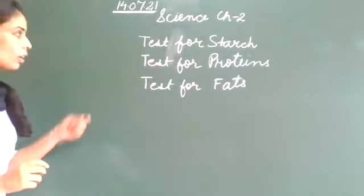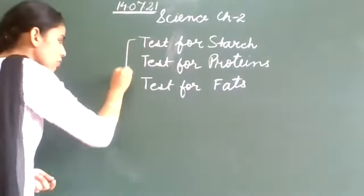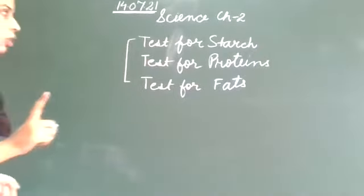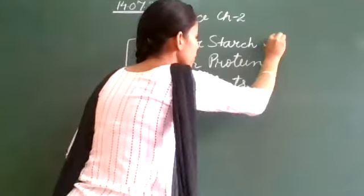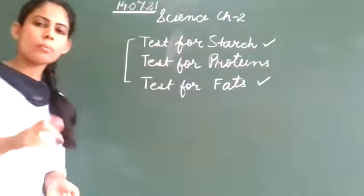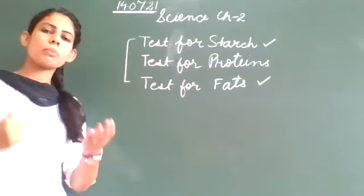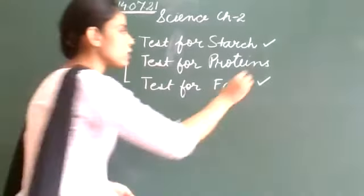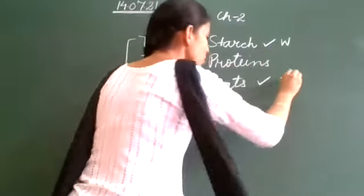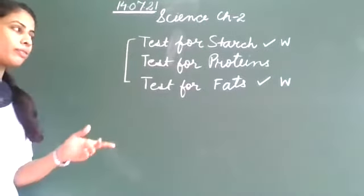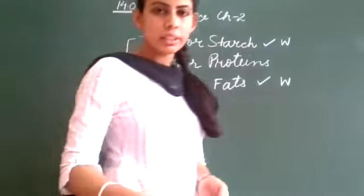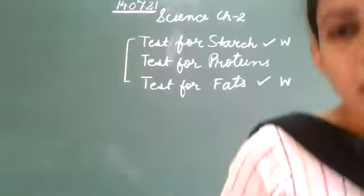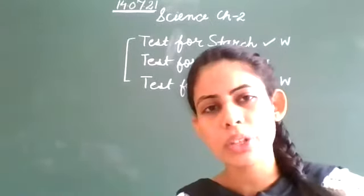Okay. So, we will discuss all these, we will perform activity. Okay. But, on notebook, you will write only two. Okay. Just like previous time, we had the activity, proper aim, procedure, next observation, and result we have written. Okay. In the same way, we will write the test for starch and the test for fat on our notebook. But, at the end of the chapter, when we complete the reading part. Okay. Okay. When we will discuss the question answer, after that, we will write these activities on our notebook. Clear?